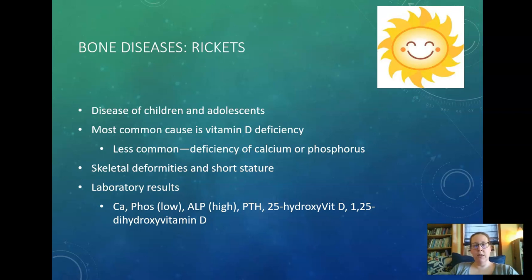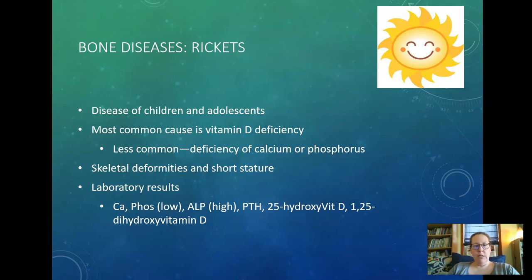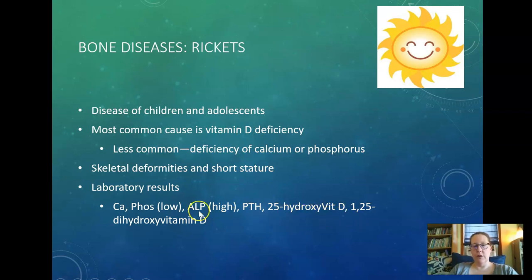Rickets is another bone disease caused by lack of vitamin D — that's where we get vitamin D from sunshine. The most common cause of rickets is vitamin D deficiency, and it's a disease that affects children and adolescents. A less common cause would be deficiency of calcium or phosphorus. Skeletal deformities include bow legs and short stature. Lab results show low phosphorus and high bone alkaline phosphatase. You'd also run parathyroid hormone, 25-hydroxyvitamin D, and 1,25-dihydroxyvitamin D — if caused by vitamin D deficiency, those vitamin D levels would be low.